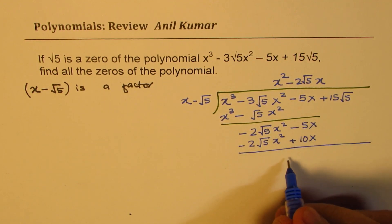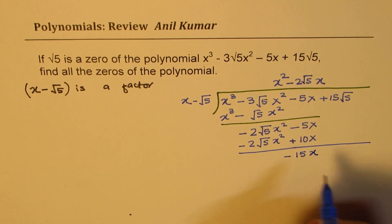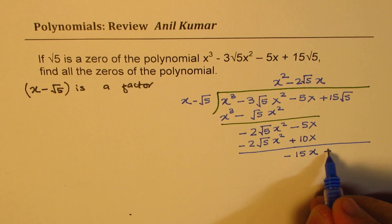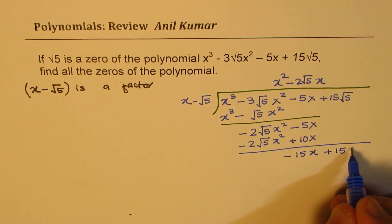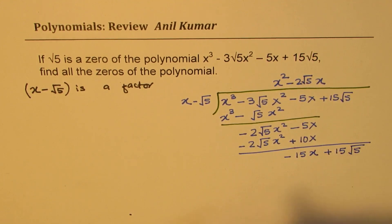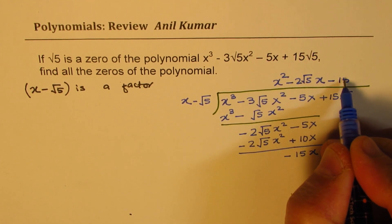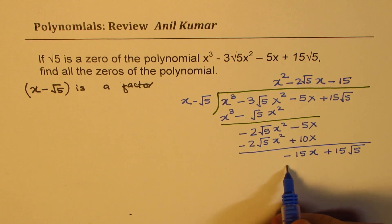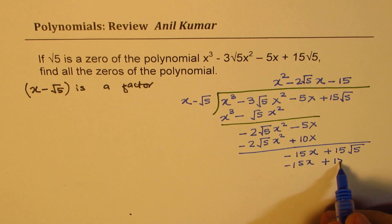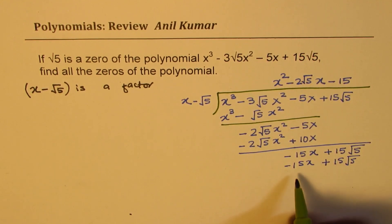When you take away, you get minus 15x. And on this side, you get plus 15 square root 5. Now, we need to have minus 15 in the quotient. That will give us minus 15x minus minus is plus 15 square root 5. Perfect. So now, when you take away, you get 0.